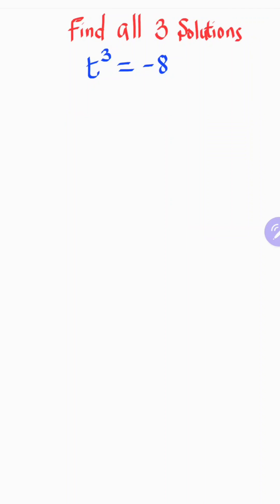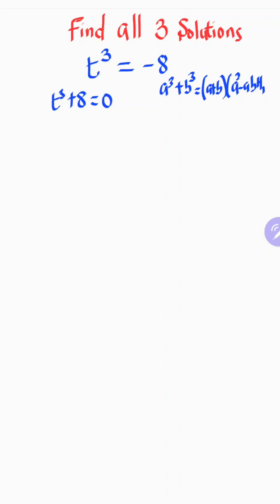In this program, we want to find all three solutions by writing the given equations. We have t to the power of three plus eight equals zero. Looking at this equation, we recall that a cubed plus b cubed can be written as a plus b, times a squared minus ab plus b squared.